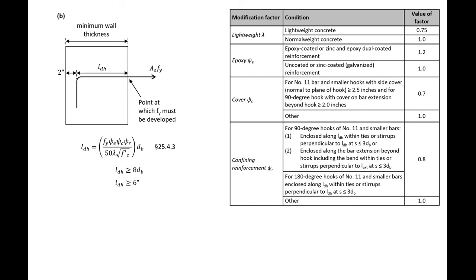We have normal weight concrete, so I have 1.0 here. We have uncoated bars, so 1.0 here. Our cover in the back and the sides is sufficient, so we can have this 0.7 reduction factor.